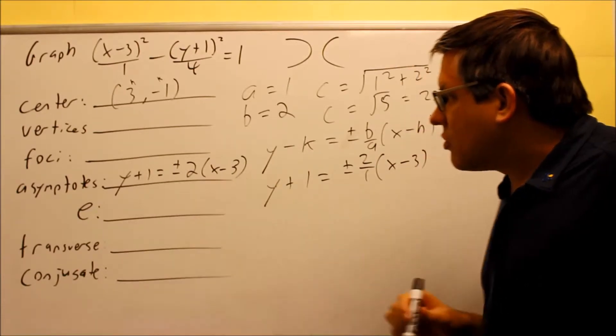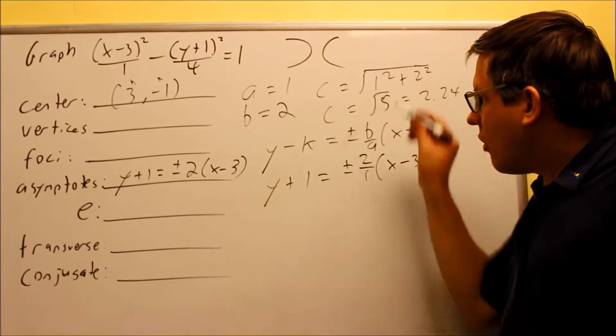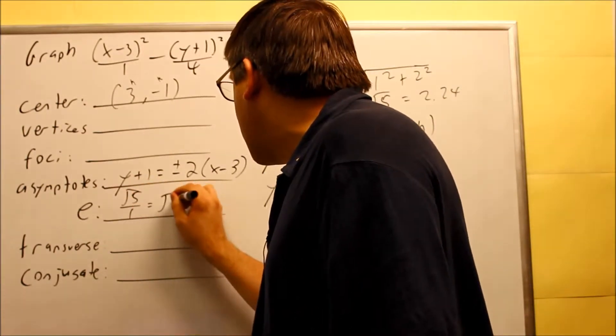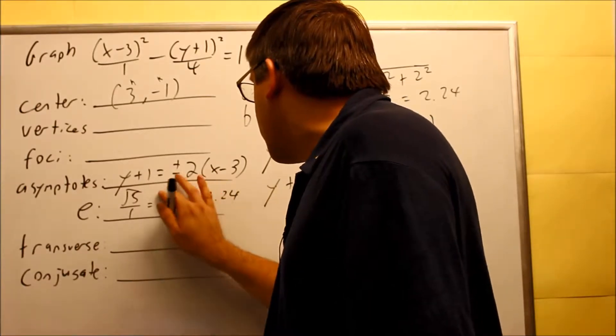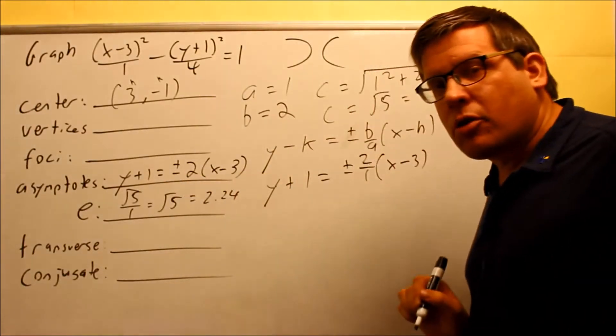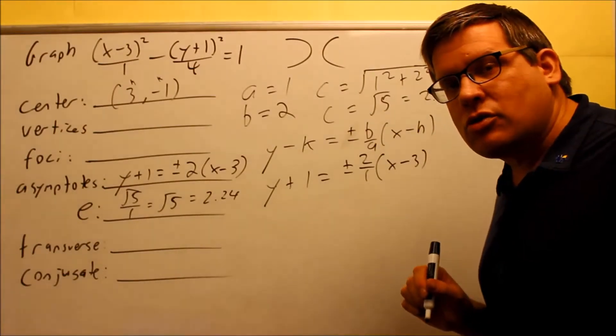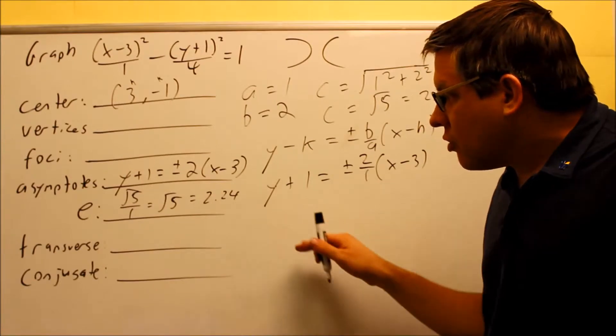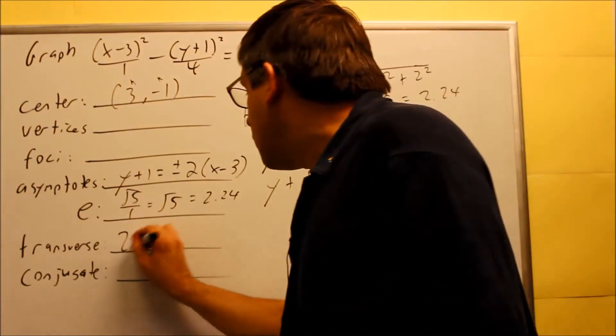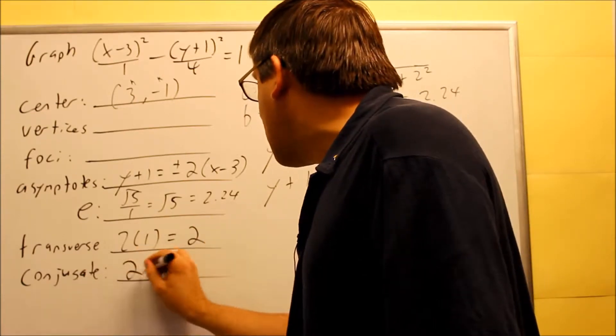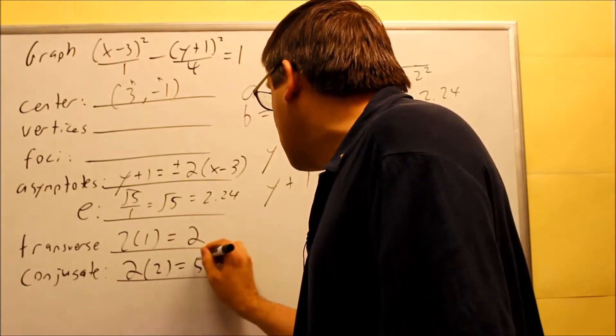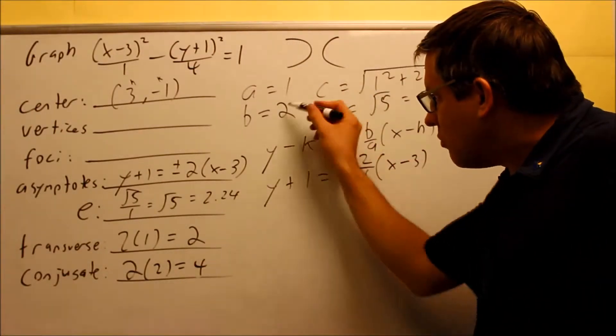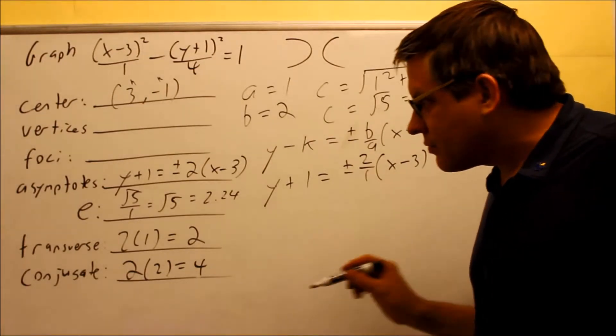Now, we're going to do eccentricity. Eccentricity is always C over A. So we have square root of 5 over 1, so square root of 5, or again, that's going to be the 2.24 here. So 2.24 is a larger number than we've had previously, which means that we should expect that this is going to be a fairly wide hyperbola when we draw it. So transverse, 2 times A, 2 times 1 is 2. Conjugate, 2 times B, 2 times 2 is going to be 4. So we have, again, the conjugate is the one that's larger this time because the B was larger.